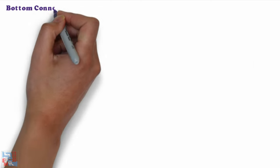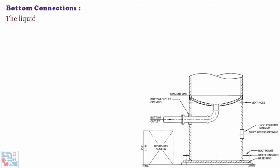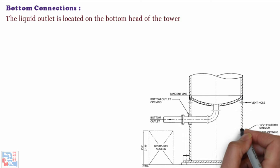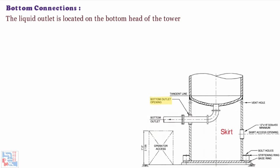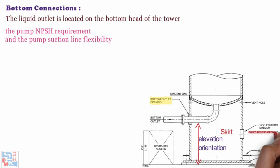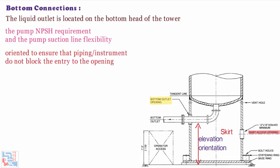Now comes bottom connections. The liquid outlet is located on the bottom head of the tower. If the tower is supported on skirt, the nozzle is rooted outside the skirt as shown in figure. The elevation and orientation of this line is generally dictated by the pump NPSH requirement and the pump suction line flexibility. Skirt access opening should be oriented to ensure that the piping or instrument do not block the entry to the openings.